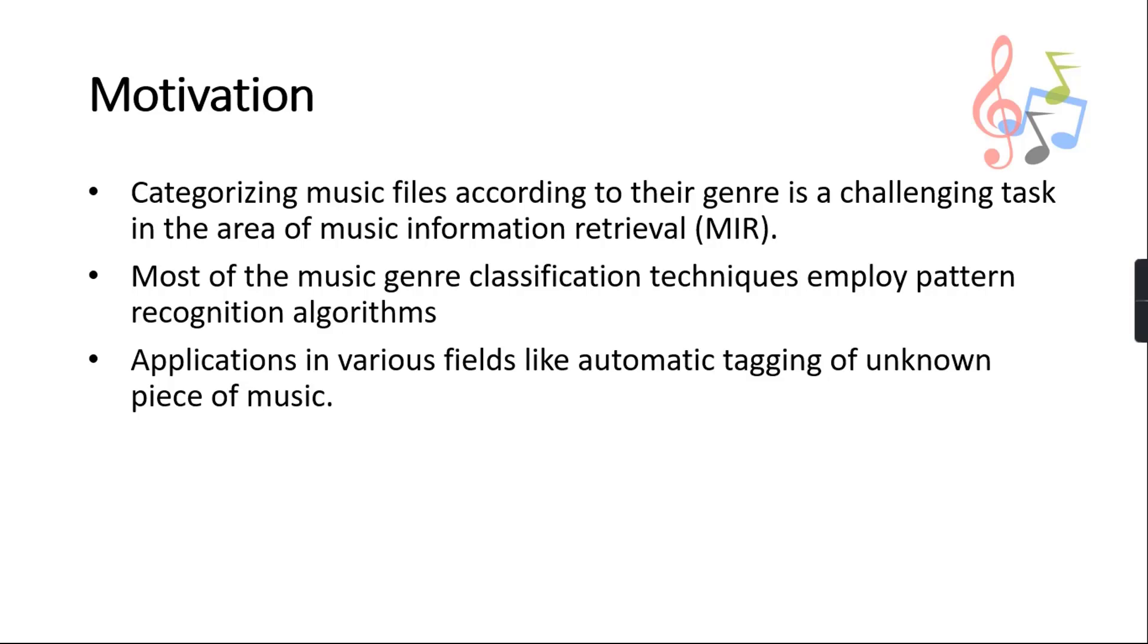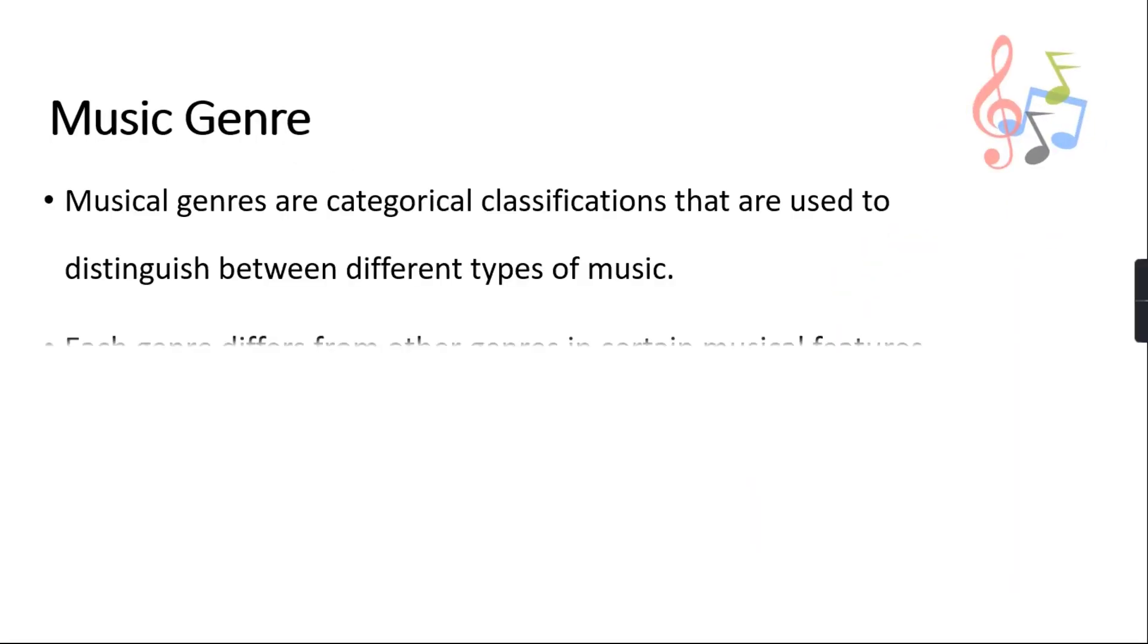Now we are going to see what is music genre. Music genre is a conventional category that identifies some pieces of music as belong to a shared set of conventions, and it is to be distinguished from musical form and musical style, although in practice these terms are sometimes interchangeably used.